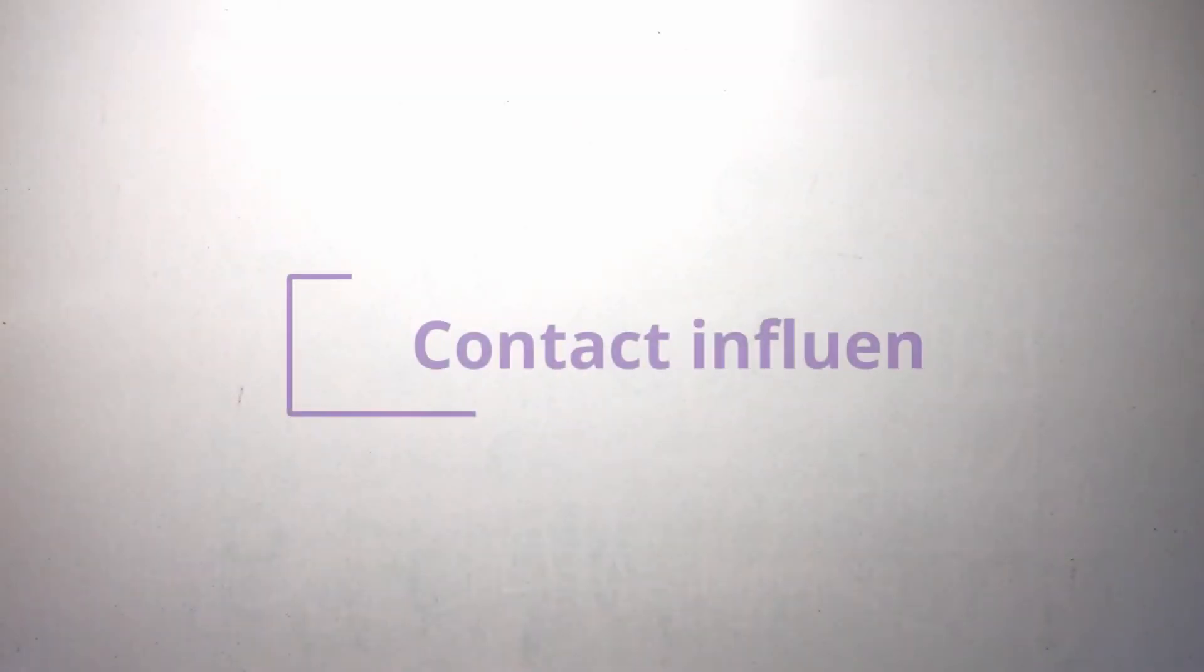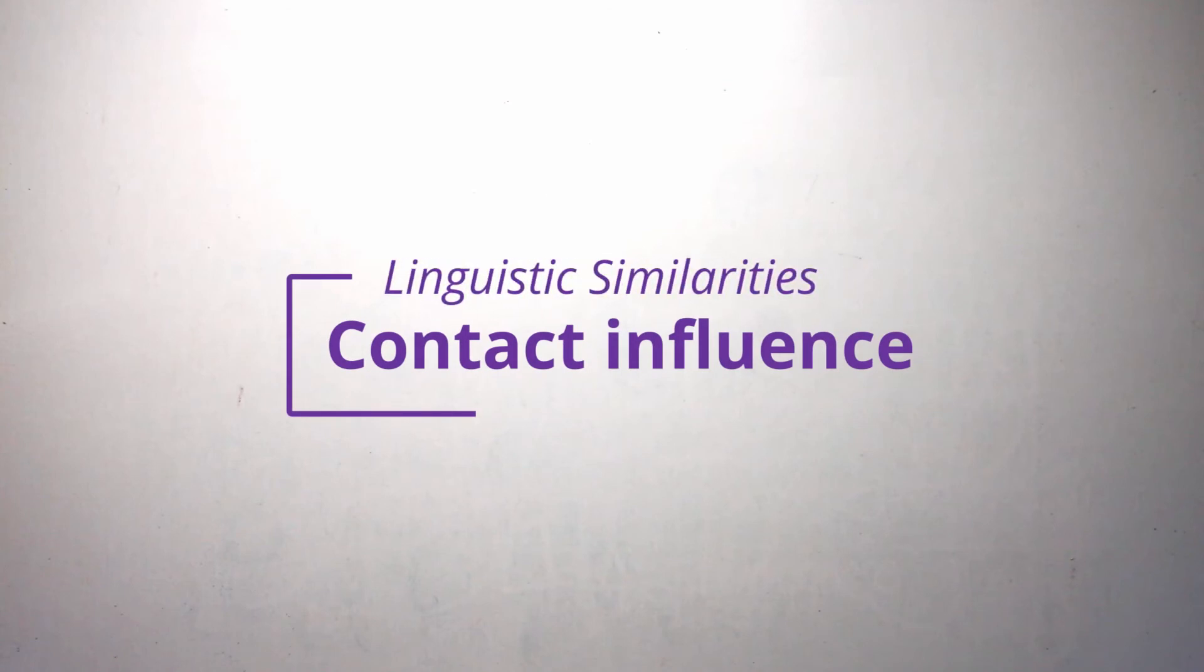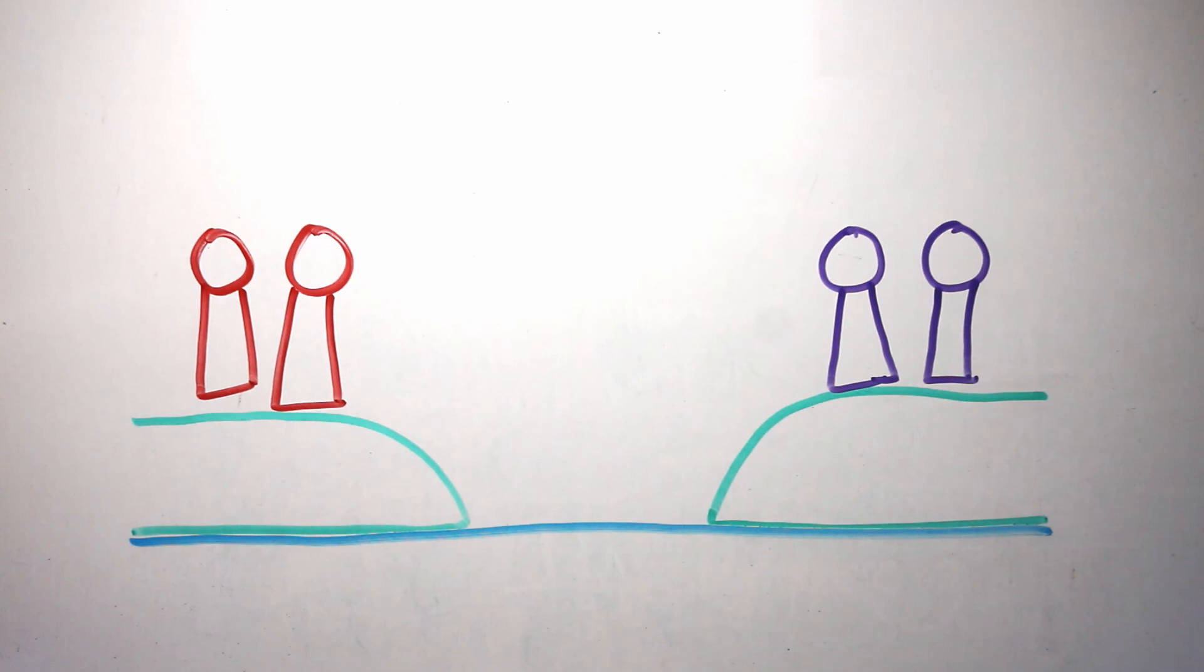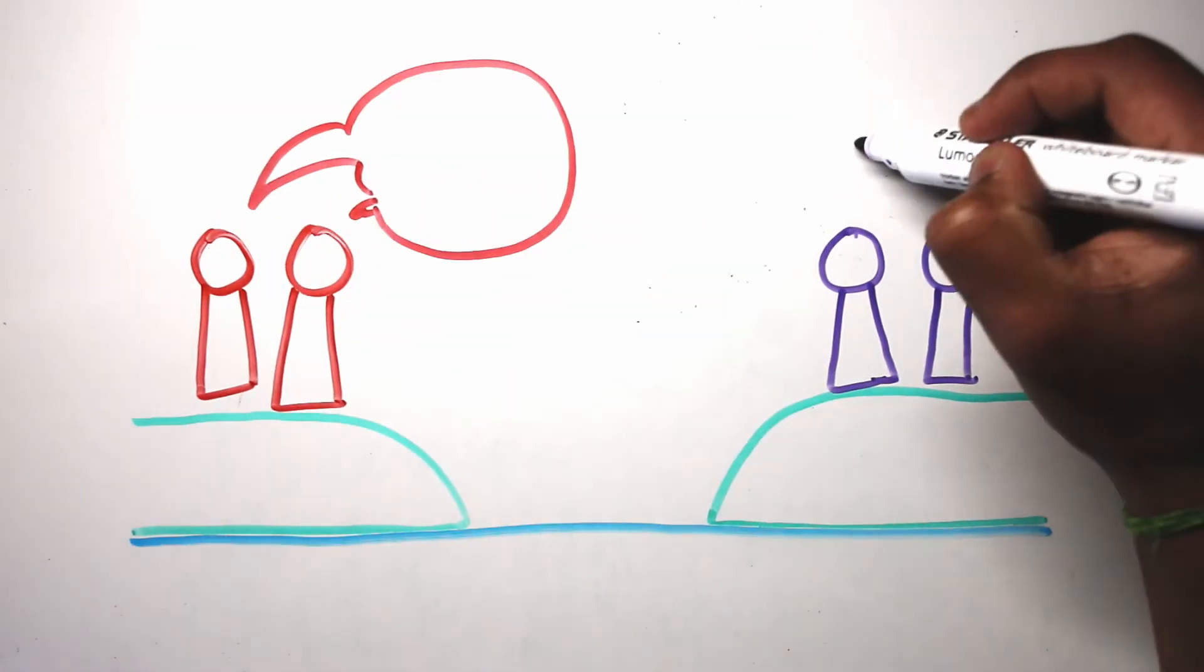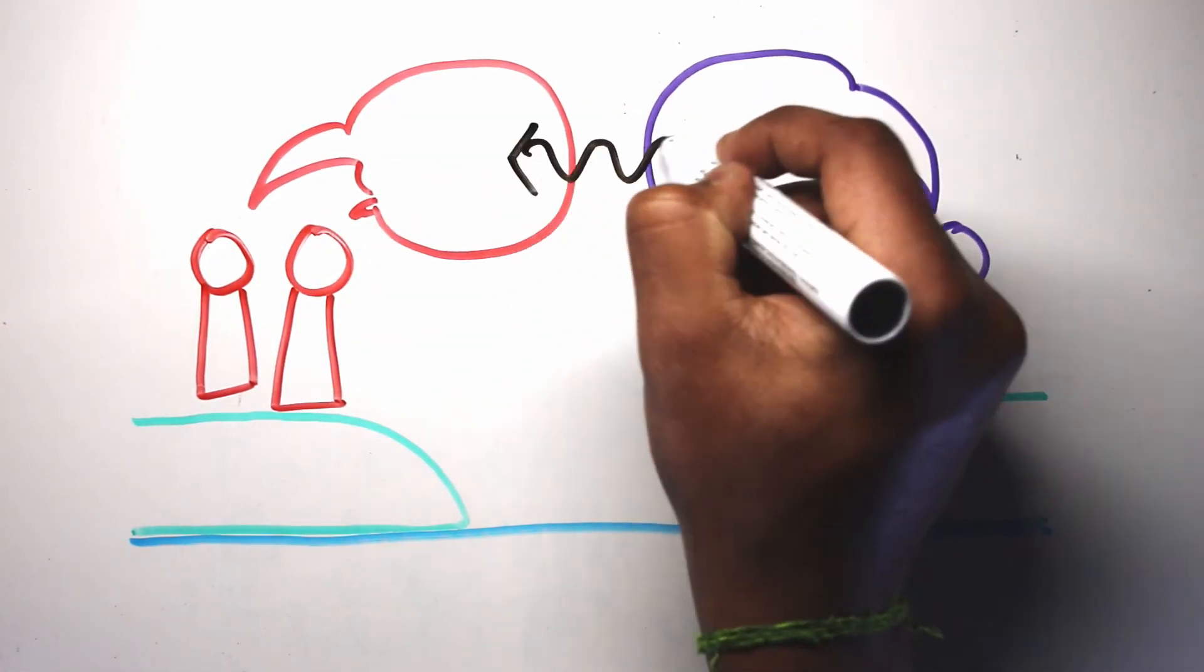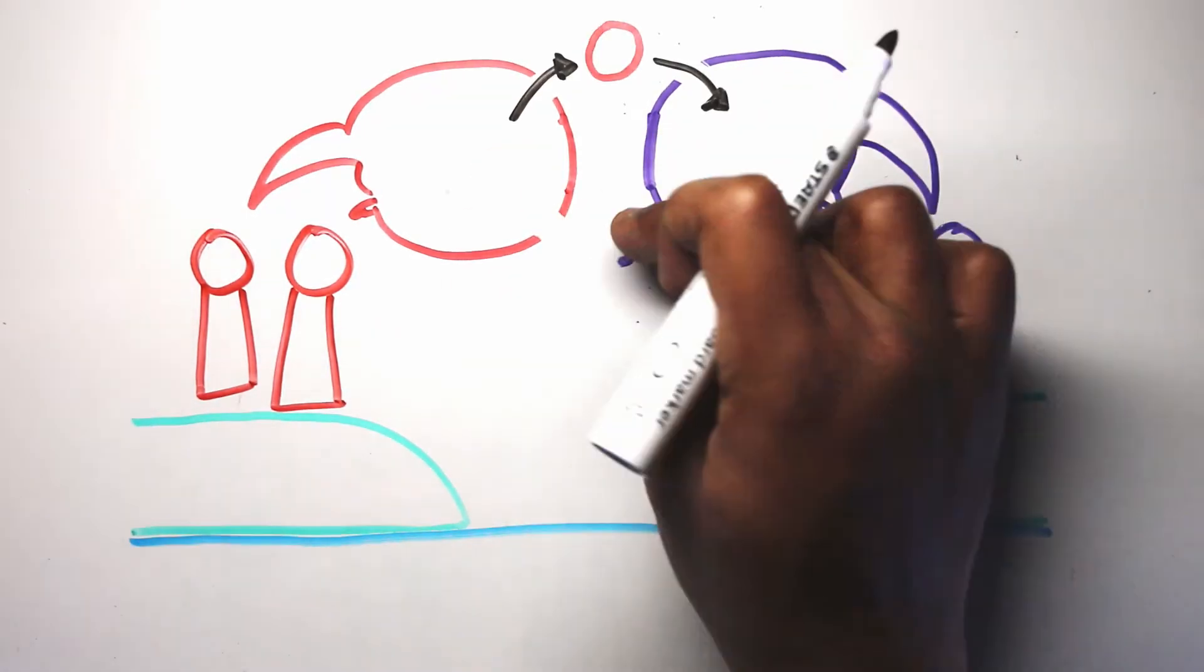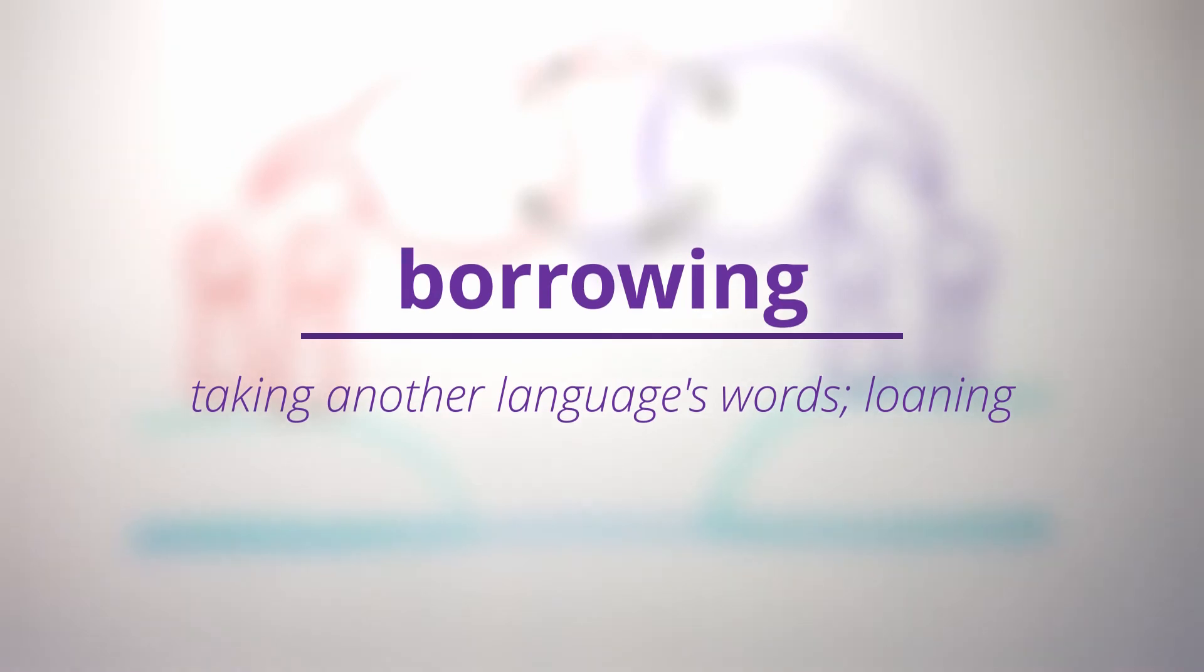However, a genealogical relationship is not the only way two languages can be similar. Take our previous example. Suppose one of the migrant groups came into contact with another group. When two groups live together, their languages can influence each other in complex ways. A common way is borrowing words, which is when one language takes a word from another language and uses it as its own.